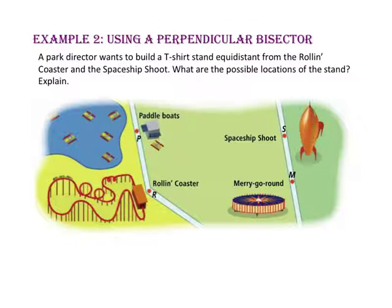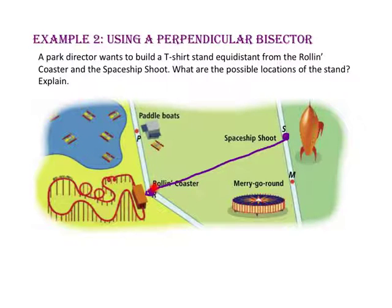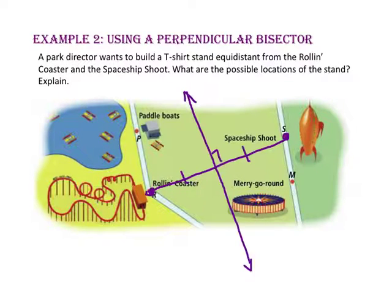In example 2, we will use a perpendicular bisector. A park director wants to build a t-shirt stand equidistant from the rolling coaster and the spaceship chute. What are the possible locations? A perpendicular bisector of a segment is equidistant to its endpoints. So if we draw segment RS, the t-shirt stand can be anywhere along the perpendicular bisector of segment RS.